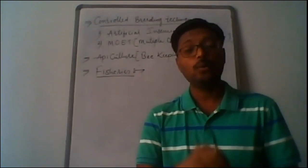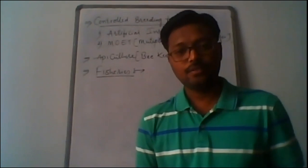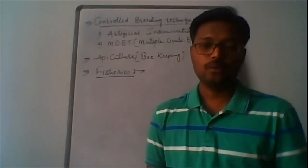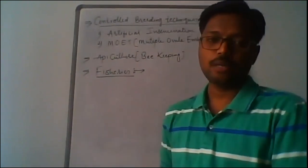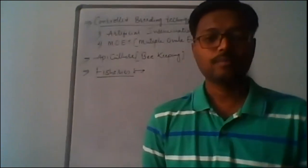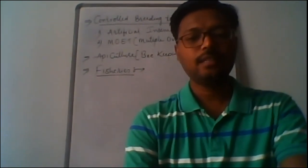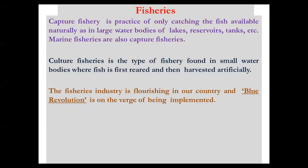If we depend only on natural methods — that is capture fishery — we cannot fulfill the actual demand and supply of food. To meet the requirement of supply of fishes throughout the year, we also depend on artificial methods — that is culture fishery — where artificially made ponds are used to culture fishes. Capture fishery is the practice of catching fish available naturally in large water bodies like lakes, reservoirs and tanks, while culture fishery is found in small artificial water bodies where fish is first reared and then harvested.